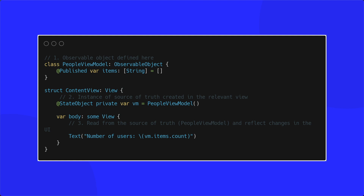Looking at the example on screen: on point one we have an observable object defined called PeopleViewModel which holds an array of items. On point two we create an instance of our source of truth within the relevant view, which is our ContentView. On point three we actually read from our source of truth and reflect the changes within the UI.